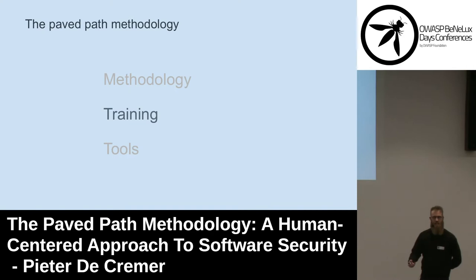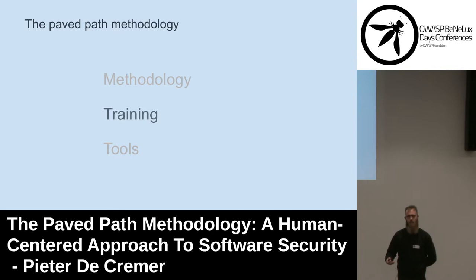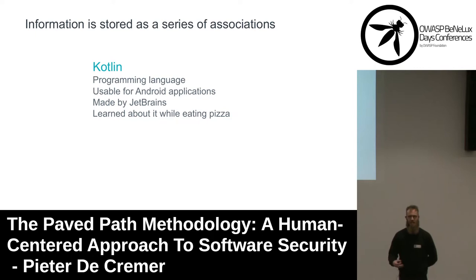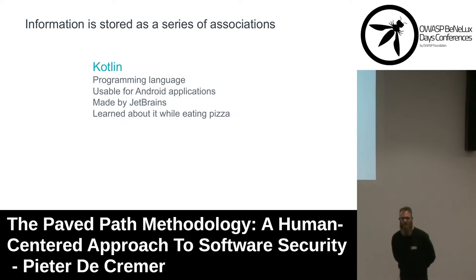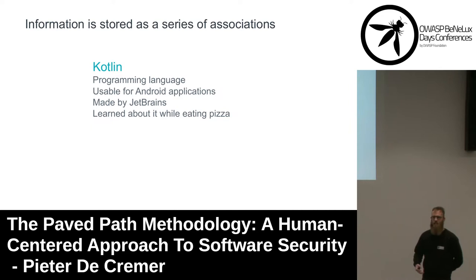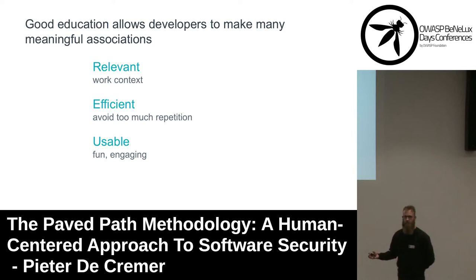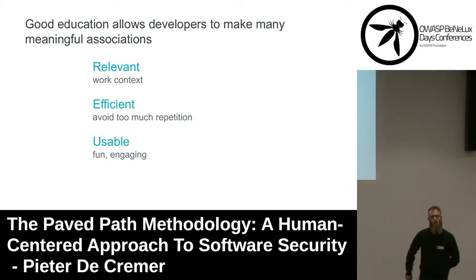So what does this look like for training? In order to understand what makes good training, we need to know how information is stored in our memories. Information is stored as a series of associations. When I think about Kotlin, I know it is a programming language, it is usable for Android applications, it is made by JetBrains, and I also remember I learned about this while eating pizza at Pizza Tuesdays at work. All of the associations in our memory can help us retrieve information — so we want the work context to be related to the training context. This is one reason why pilots do not learn to fly airplanes by looking at PowerPoint presentations, but by using flight simulators.